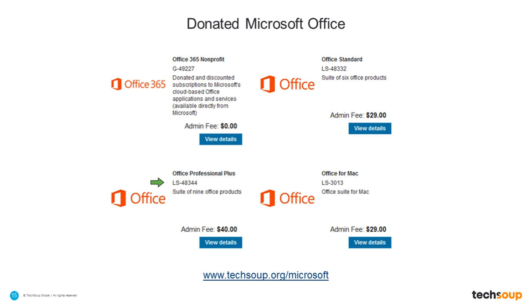Software Assurance allows you to do a number of things, including: if Microsoft comes out with a newer version of that product within a two-year timeframe, you can upgrade for free at no cost. You can have the latest, greatest version within that two-year window without paying anything and without going through TechSoup again — you can go directly to Microsoft to upgrade to the newest one.